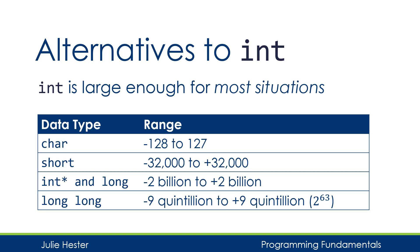The third size is usually used by two different data types, int and long. This data type ranges from about negative 2 billion to positive 2 billion. And then finally we have the long long. If you're working with numbers that are bigger than 2 billion, you might want to consider using the long long. It uses twice as much storage, so you can use numbers between negative 9 quintillion and positive 9 quintillion, which is 2 to the 63rd power.